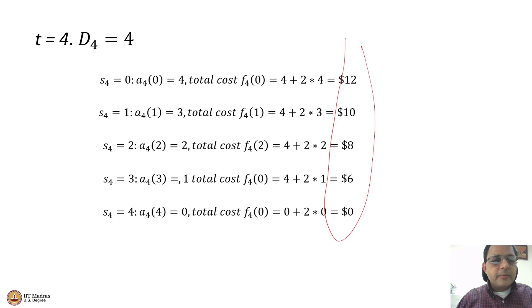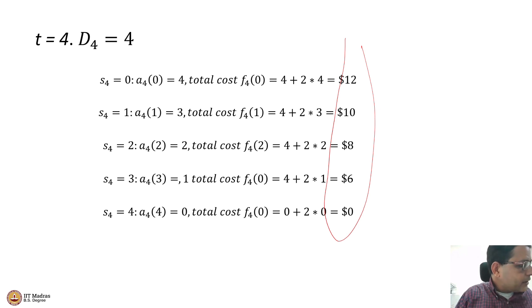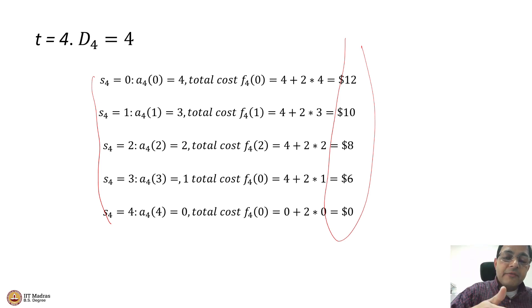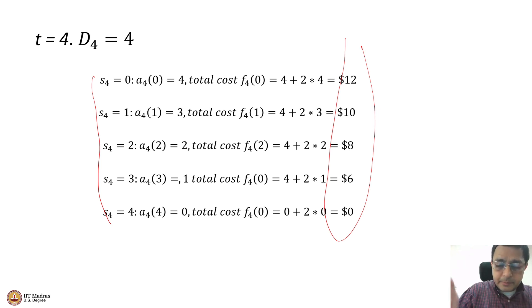In the time period 3 problem, we have to look at the immediate cost, which is the cost of meeting the demand in time period 3, plus the implication of the state variable on time period 4. Remember, the ending inventory of time period 3 becomes the beginning inventory of time period 4. So not only do we have to meet the demand in time period 3, we should take actions that also minimize the cost of meeting the demand in time period 4.